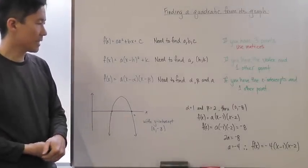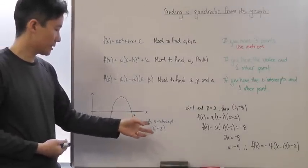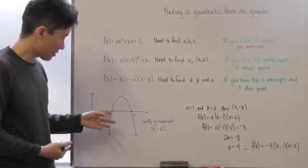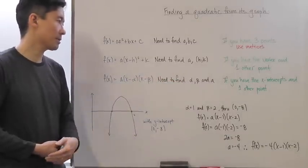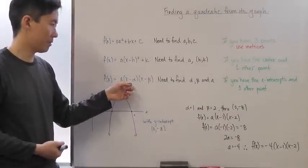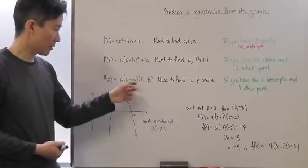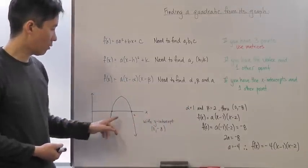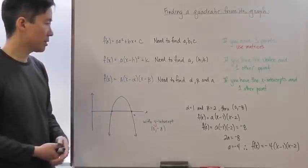Let's say then that since we know that this is going to be the x-intercepts, we should use the intercept form of the quadratic because we know that alpha is going to be equal to 1 and beta is going to be equal to 2.